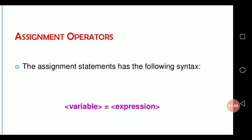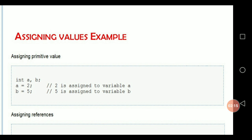Here, we are using one special symbol called single equal to. The single equal to symbol is used to store the right-side value into the left-side variable name. In this slide, it shows the syntax: variable equal to expression or value. Sometimes we are giving a direct value into the variable, and sometimes we are giving an expression and evaluating it. The final result will be stored into the variable name. For example: A equal to 2, B equal to 5 — we directly assign value 2 into variable A and 5 into variable B.